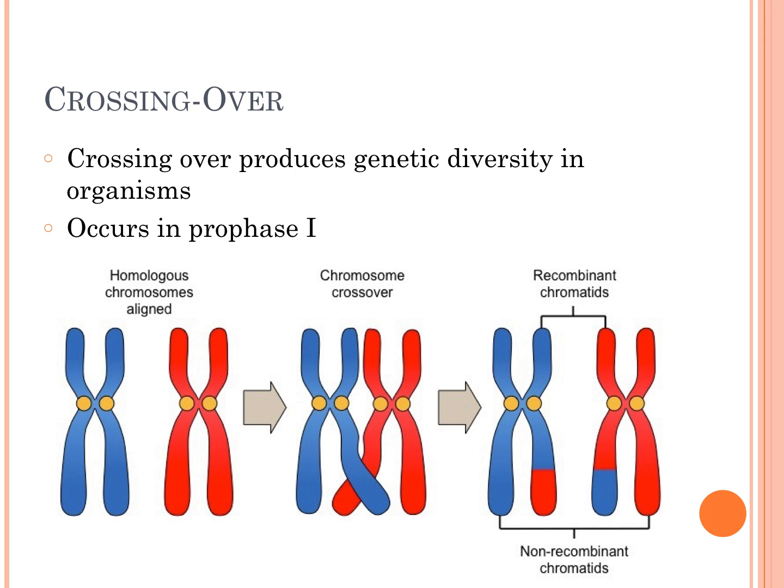Let's take a closer look at crossing over. Crossing over produces genetic diversity in organisms — this is the reason why you don't look exactly like your mom, dad, brother, sister, or cousin, because your chromosomes have crossed over at some point. Crossing over occurs in prophase one of meiosis one. The chromosomes align, then cross over and actually exchange parts of those strands of DNA, producing recombinant chromatids — they have recombined to form a new genetic code.